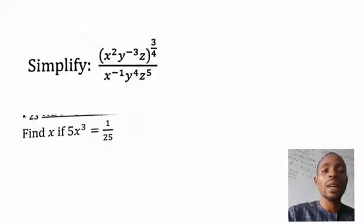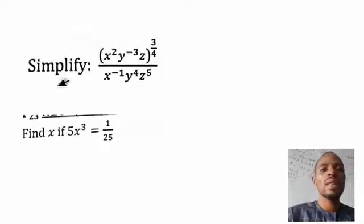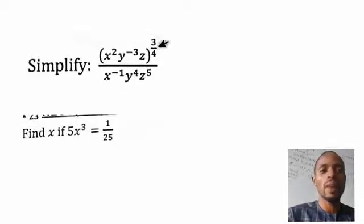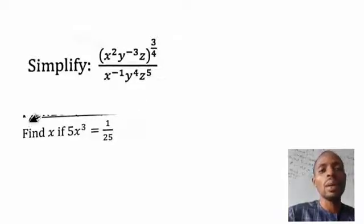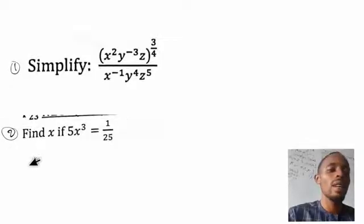Let's dive in. The first question says: simplify — open bracket, s squared times y raised to power minus three times z, close bracket, raised to power three over four — divided by s raised to power minus one, times y raised to power four, times z raised to power five. The second question: find the value of s if five raised to power s times five raised to power three equals one over five. In this video I will solve question one; question two will be given as an assignment.